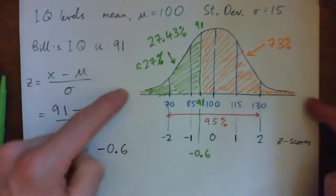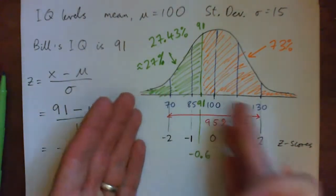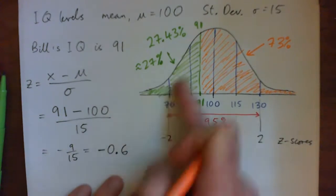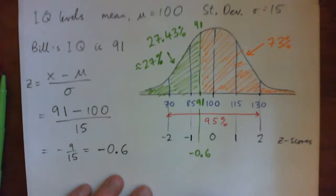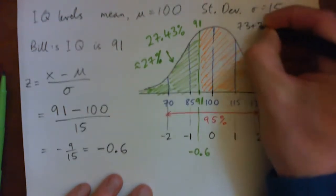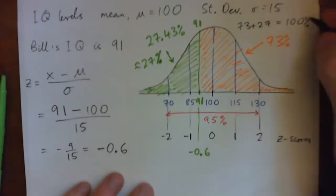And anyone watching from home, you can press pause and try it. Well, exactly, it's 73% because they both add to 100. The whole area under the curve is 100%. So he scores higher than 27%, the green area. He scores lower than 73%, right? And 73 plus 27 gives 100%, right? That's our 100%, right?